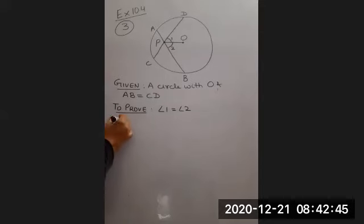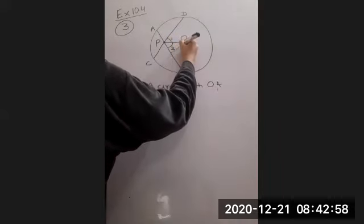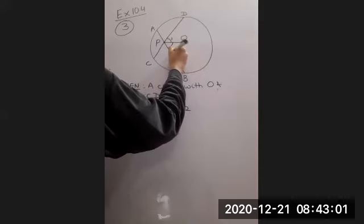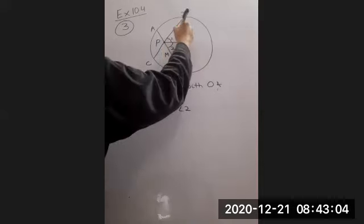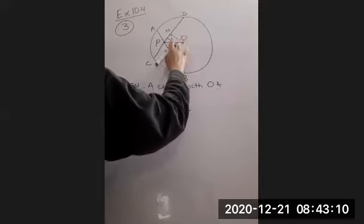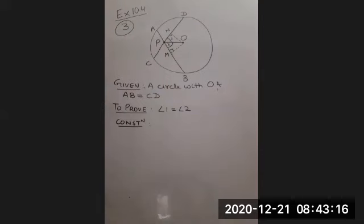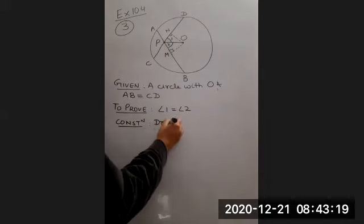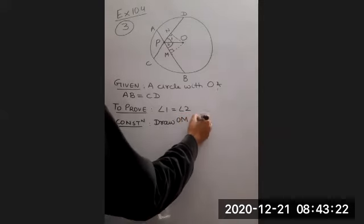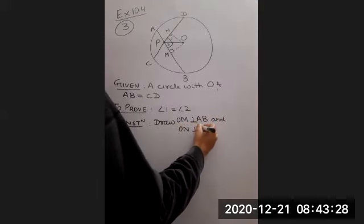Let us do one construction, children. We know that the chords are equal. So let us draw a perpendicular from this center on the chord. Let us draw this perpendicular OM here and perpendicular ON here. So draw OM perpendicular to AB and ON perpendicular to CD.